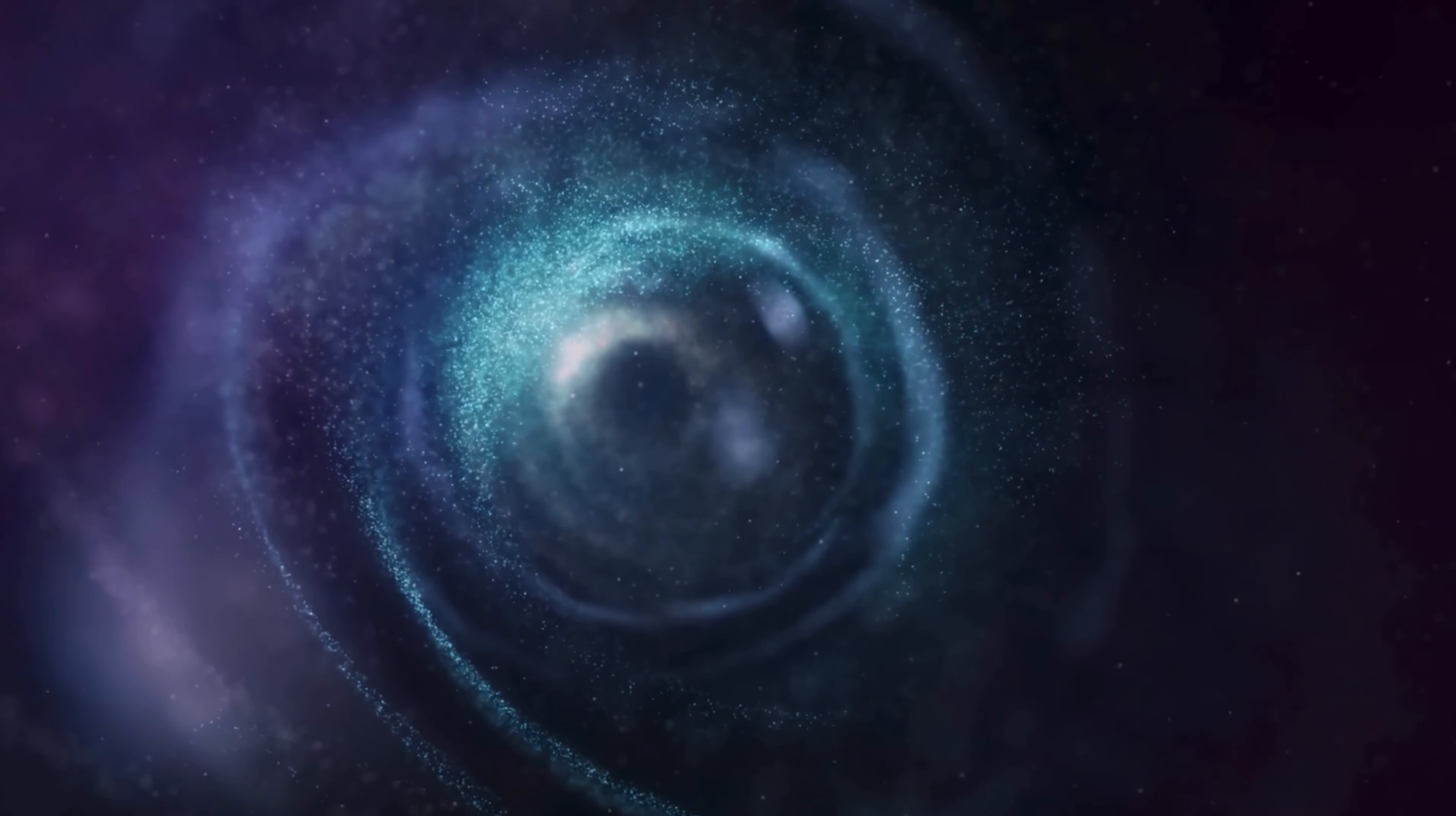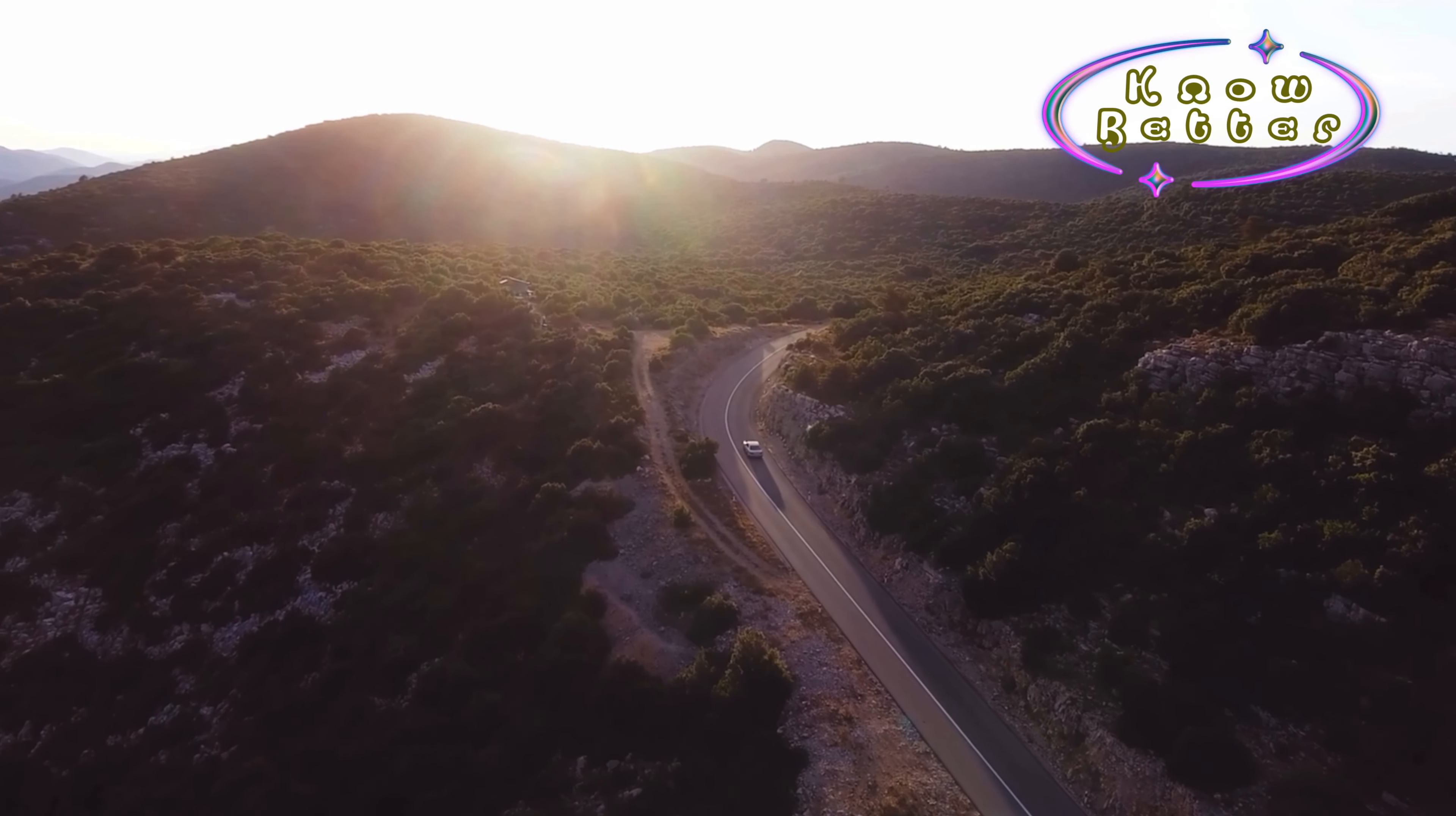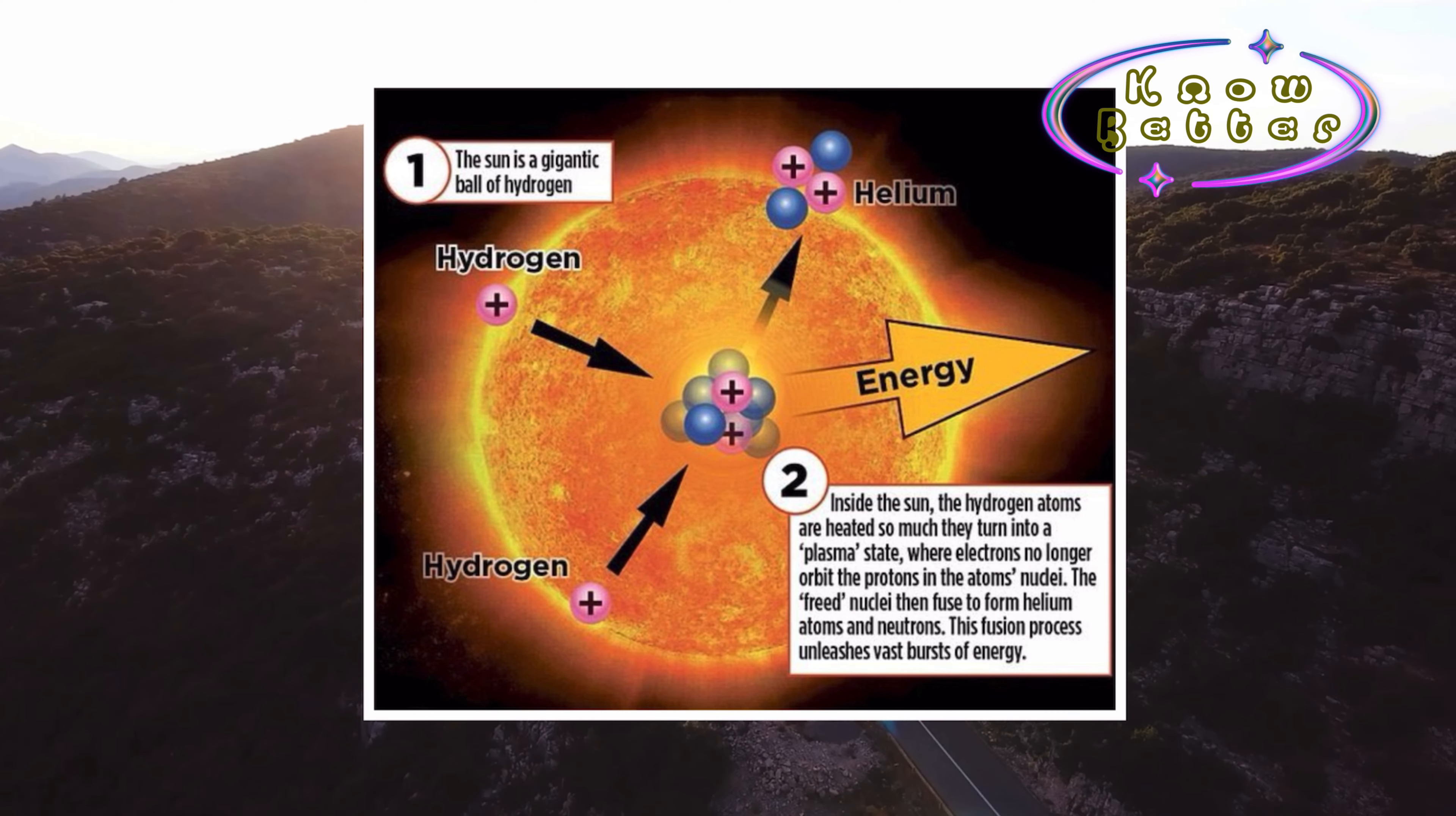It is the nearest star to the Earth and the ultimate source of energy for life on Earth. Its diameter is 1.4 million kilometers. The Sun is made up of hydrogen, helium, and other elements. All of these are gases.